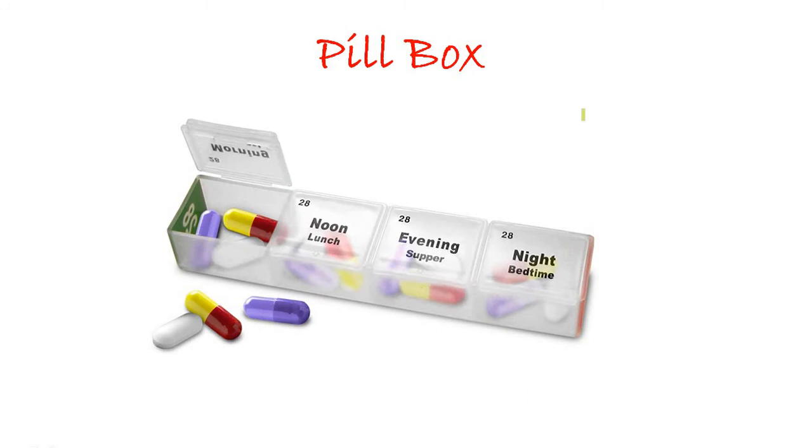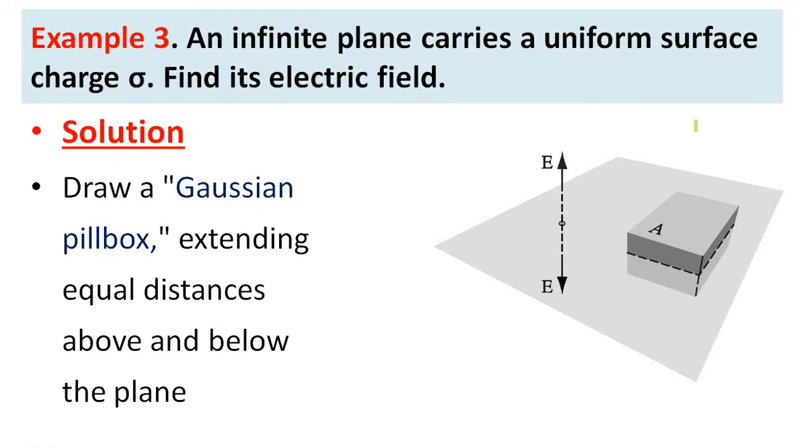We know what is a pillbox. Some people may need to take several medicine, several pills a day at different times. So to reduce the confusions they can use this type of pillboxes. So it's a rectangular box. It has a lid. We need to just consider a rectangular box. That's it. So here it is just a rectangular box and that rectangular box is called Gaussian box.